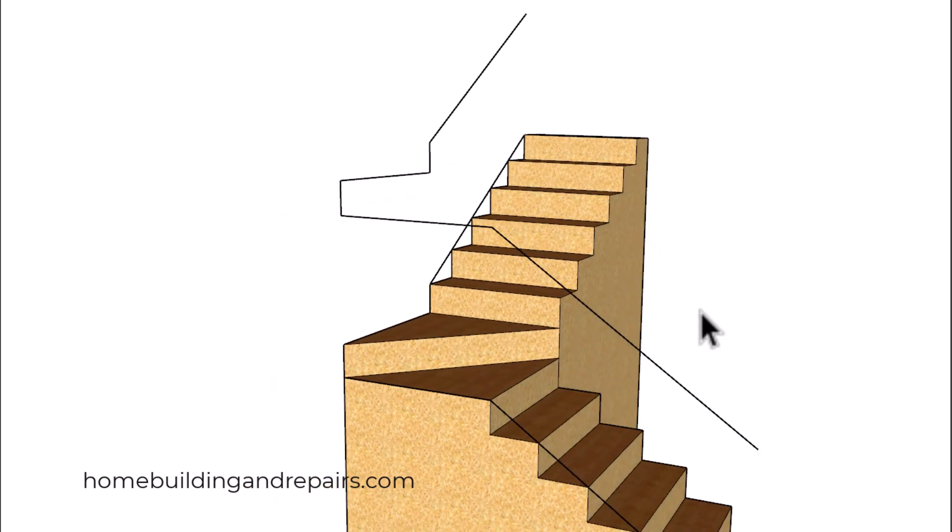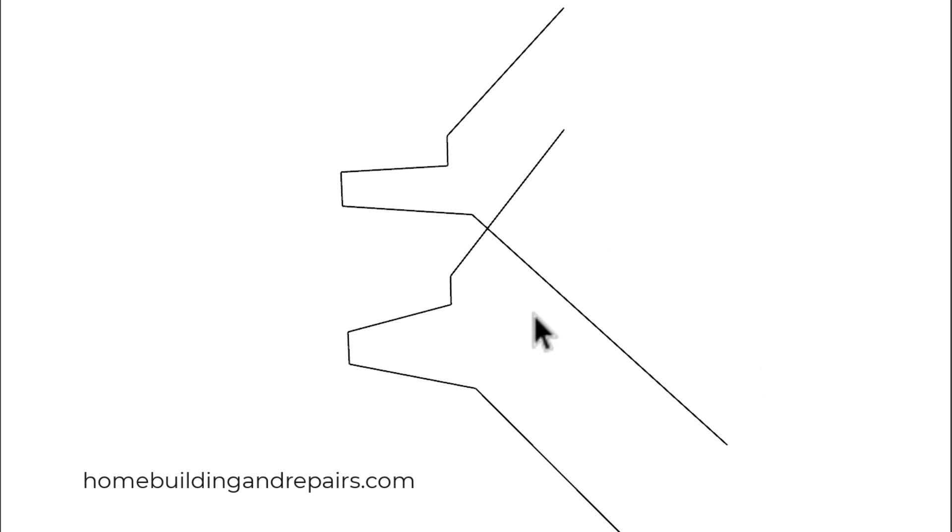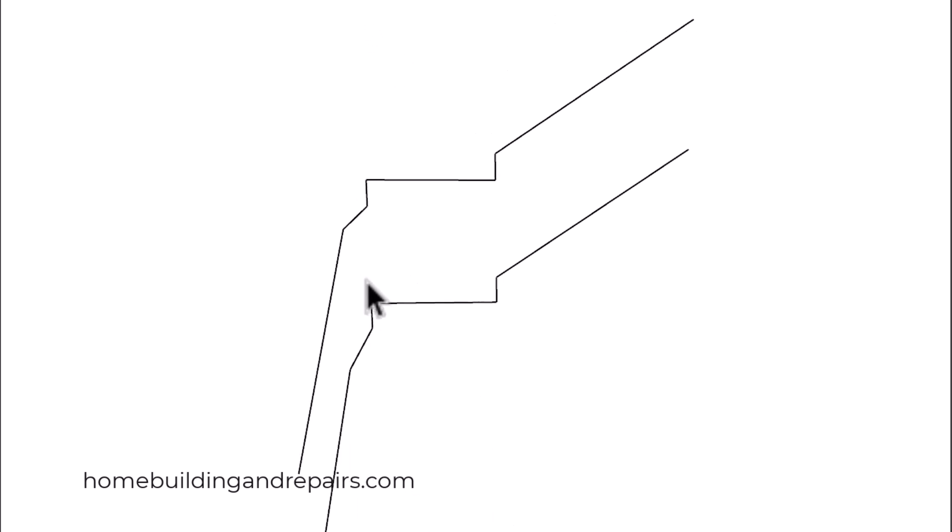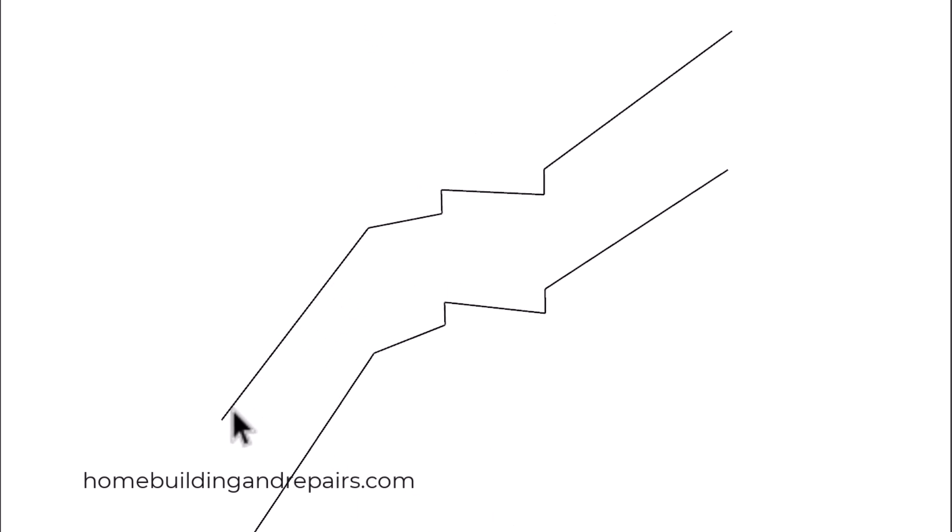Something like this should pass your building code. All of these measurements would be right where they need to be, as long as one of the starting points fell between 34 and 38 inches, if that's the code for your area.